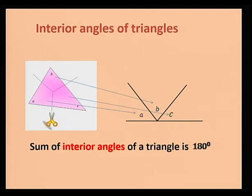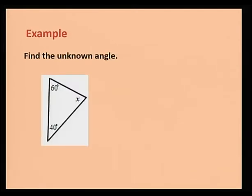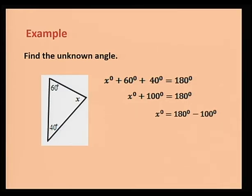Let's have some examples on using the sum of interior angles of a triangle. In the first example, we have a triangle where two angles are known and one is unknown. To calculate the unknown angle, we use the sum of the three angles which is 180 degrees. So, x° + 60° + 40° = 180°. Adding 60° and 40° gives 100°, so x° = 180° − 100° = 80°.